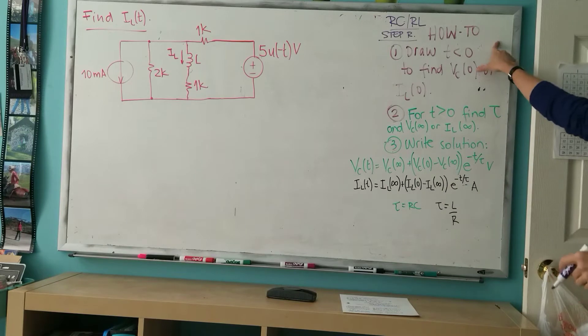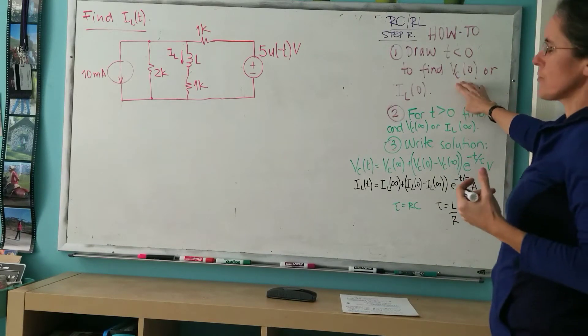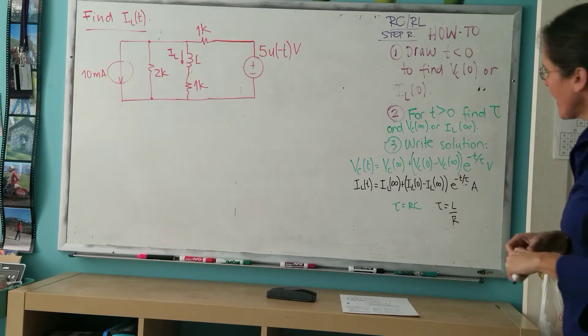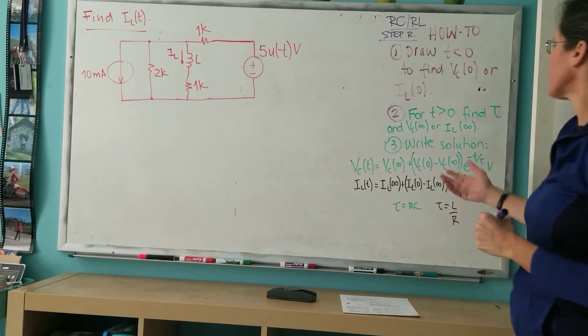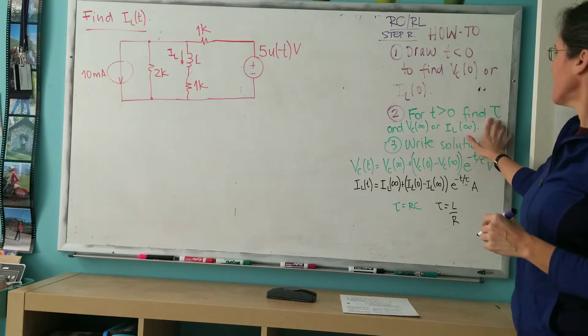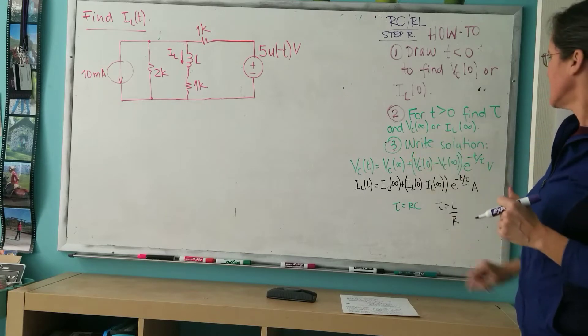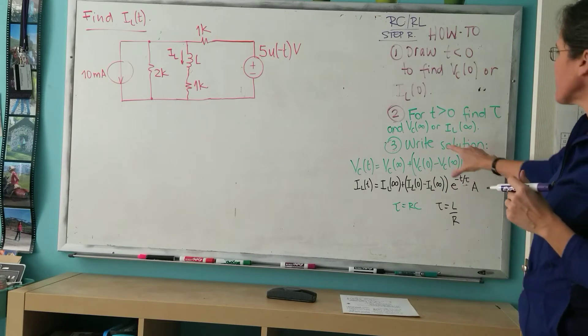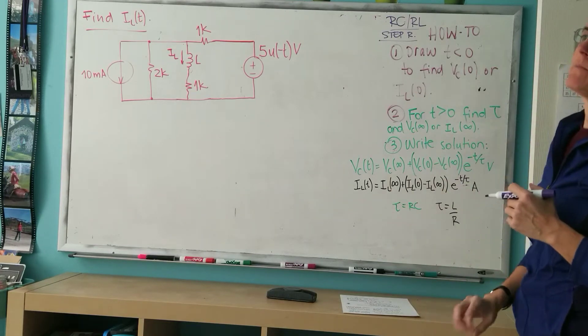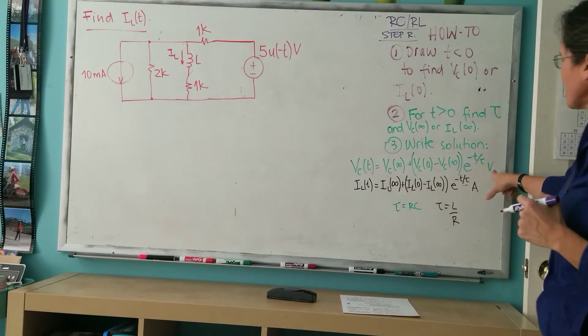First we're going to draw the circuit for t less than zero and find the voltage across the capacitor or the current through the inductor. Then we draw the circuit to find tau and the voltage across the capacitor for t equals infinity or the current through the inductor. Once we have these three numbers, which are usually scalars, we're going to write the final solution. This is literally a matter of putting in the parameters.